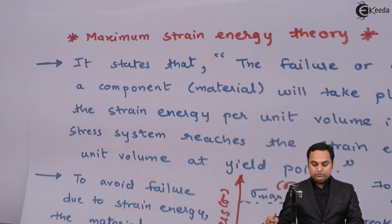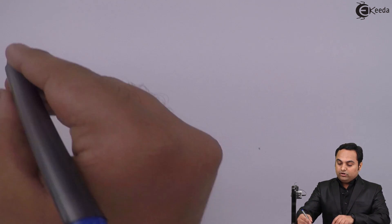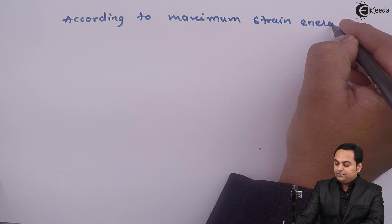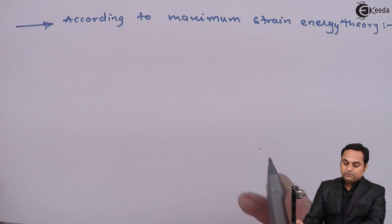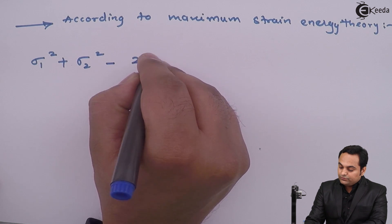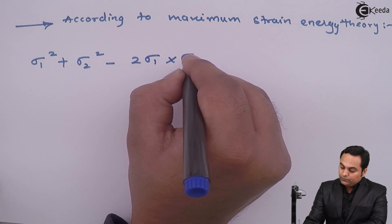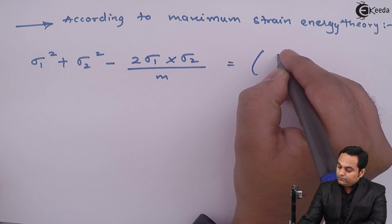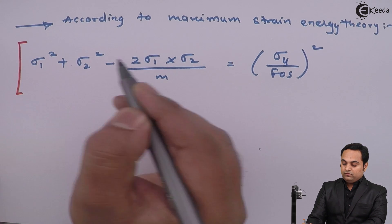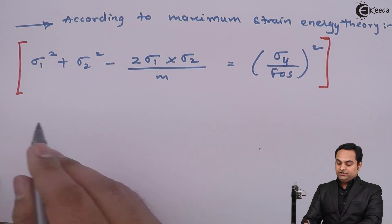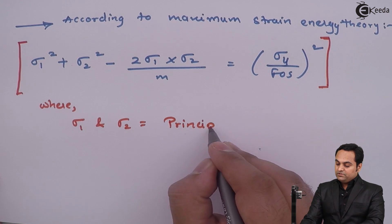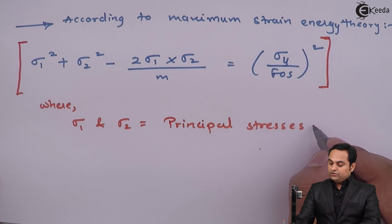According to Maximum Strain Energy Theory, the relation is: Sigma 1 squared plus Sigma 2 squared minus 2 times Sigma 1 times Sigma 2 divided by m, equals Sigma Y divided by factor of safety, all squared. Here Sigma 1 and Sigma 2 are called the principal stresses, with units of Newton per mm squared.